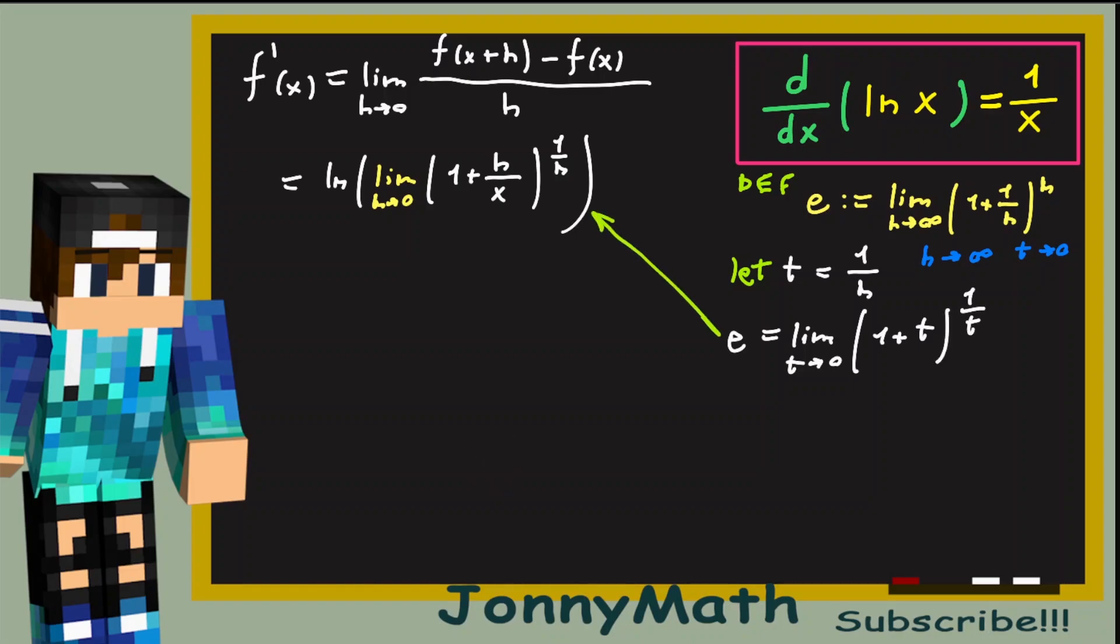Okay, notice how this is actually very similar to our previous limit. So, to get the number here, we could actually do another substitution. So, let, for example, n be equal to h over x.